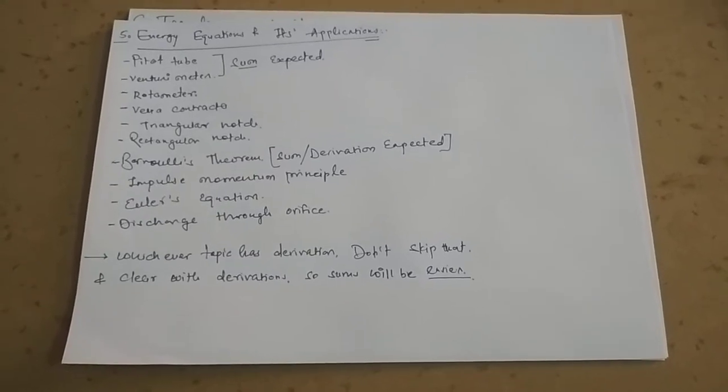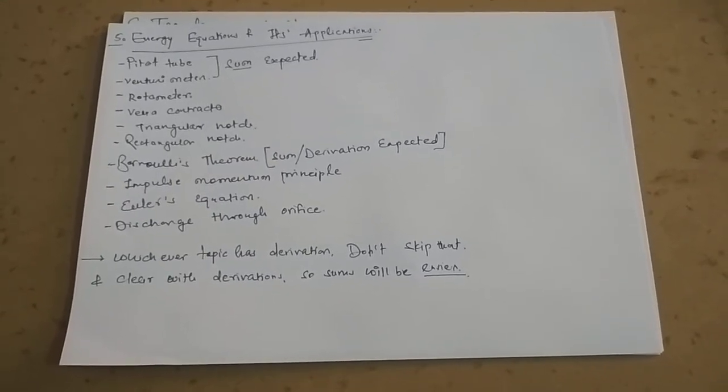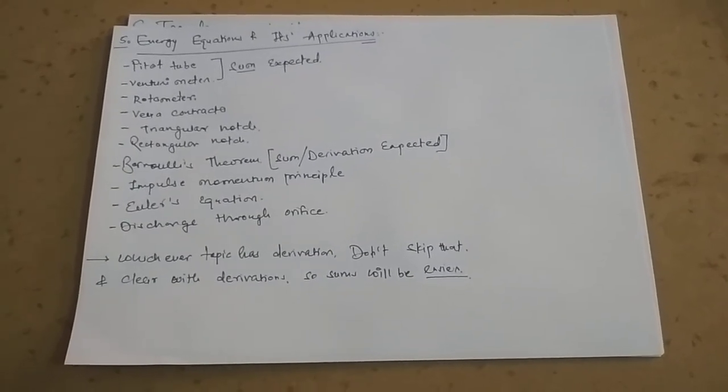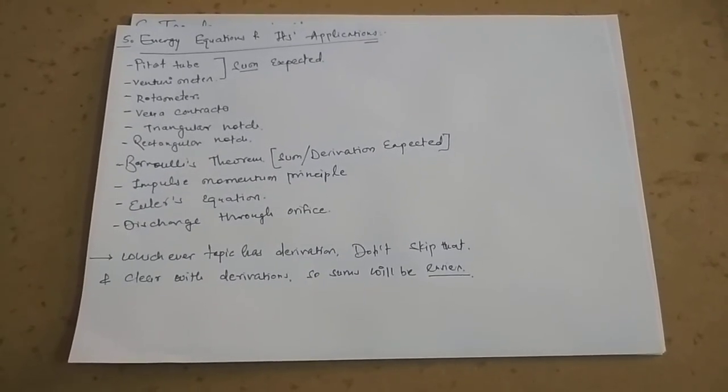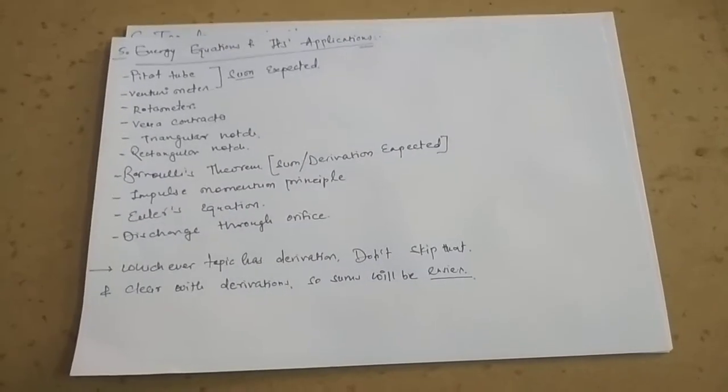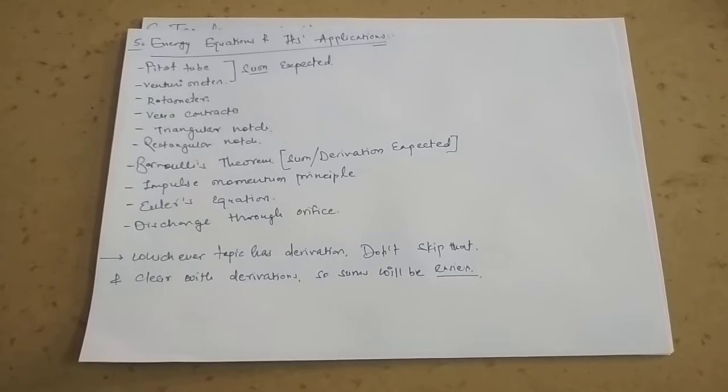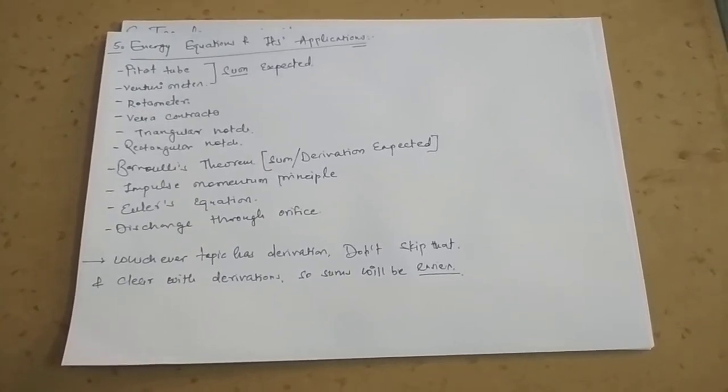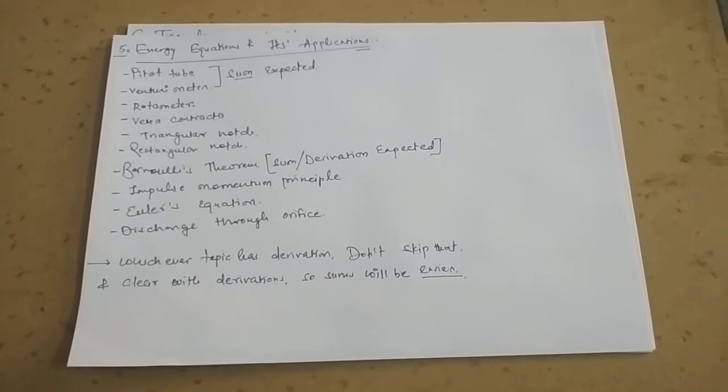There is Bernoulli's theorem, the sum and derivation expected. There is impulse momentum principle, Euler's equation, and discharge through orifice. There might be a derivation from discharge through orifice and a small sum of two or three marks. Any topic can be asked from this chapter, so you cannot skip this chapter at any cost.